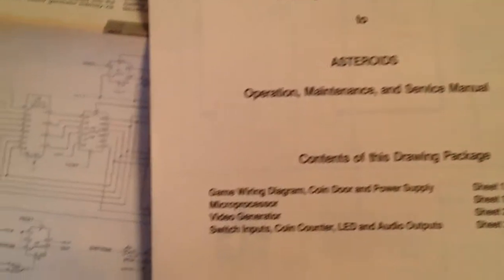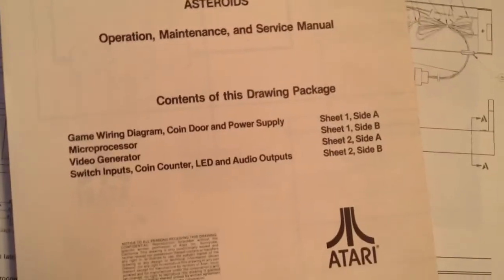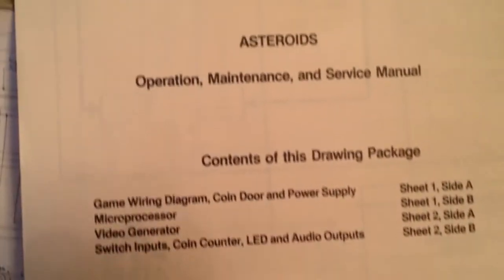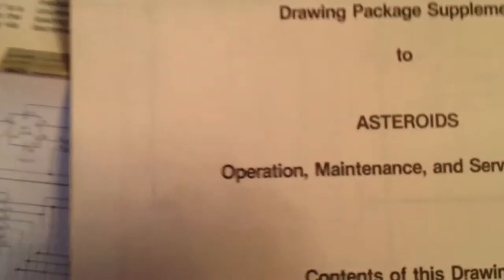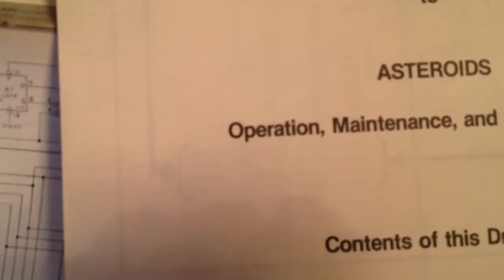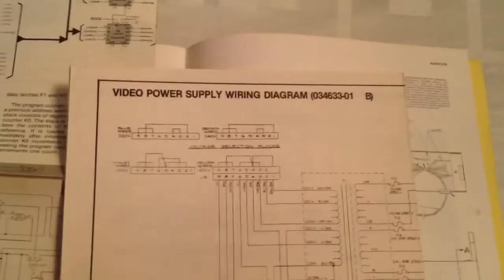There you can see. Atari. Drawing package supplement. Look. Confidential, if you can read that. Little blurry. Saying that the contents of the drawing in this diagram are confidential. Just wanted to show that and share that with you.